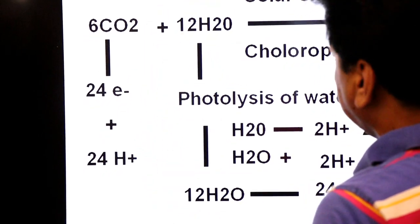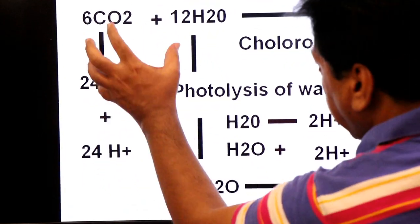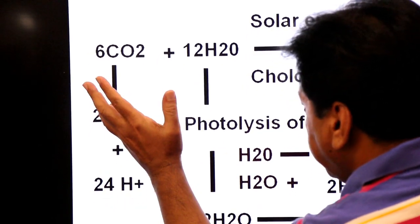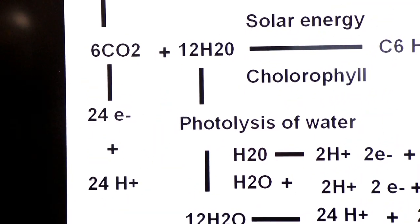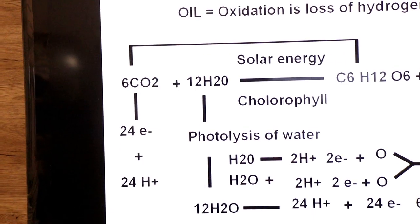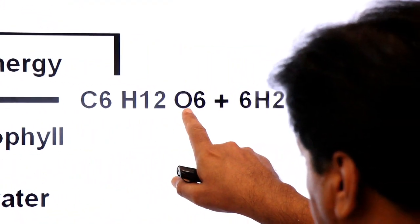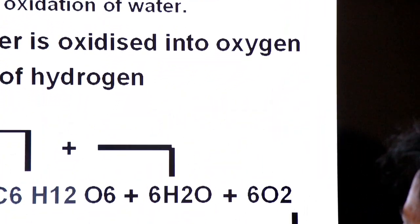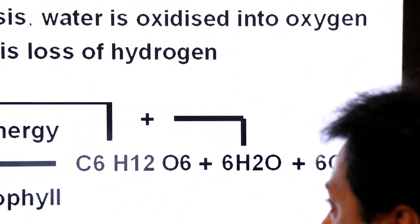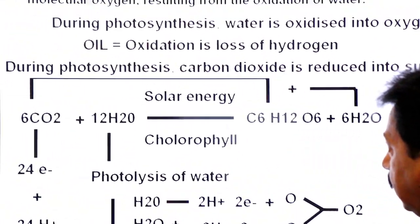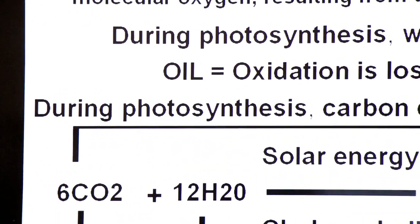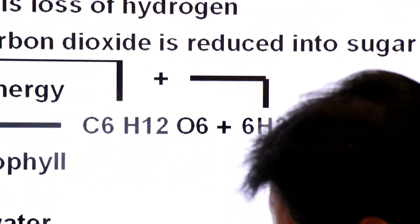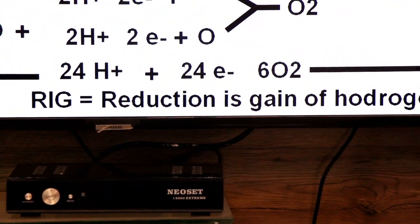Carbon dioxide is reduced into glucose. When you add 24 protons and 24 electrons to 6 carbon dioxide molecules, you end up with glucose (C₆H₁₂O₆), and 6 water molecules are also produced. So carbon dioxide is reduced during photosynthesis — carbon dioxide is reduced into sugar. Reduction is gain of hydrogen — RIG, reduction is gain.